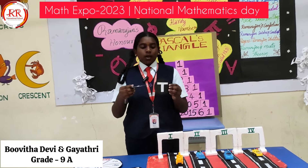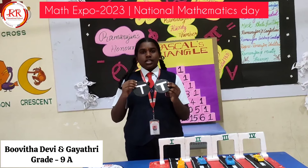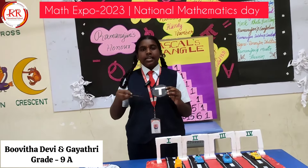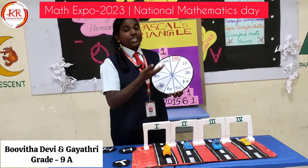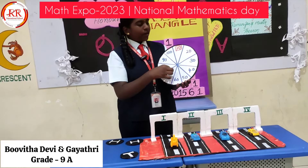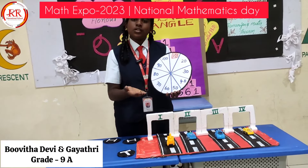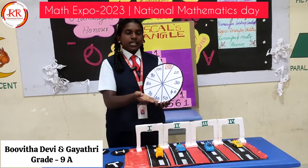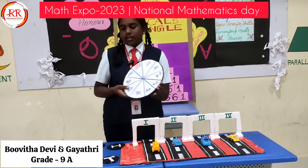Suppose if I am tossing two coins, I will get the possible outcomes: tail-tail, head-head, head-tail, or tail-head. Likewise, if I am spinning a rotating arrow and it points to the number 20, what are the possible outcomes for getting 20? That is 10 plus 10 is equal to 20, or 15 plus 5 is equal to 20, and so on.